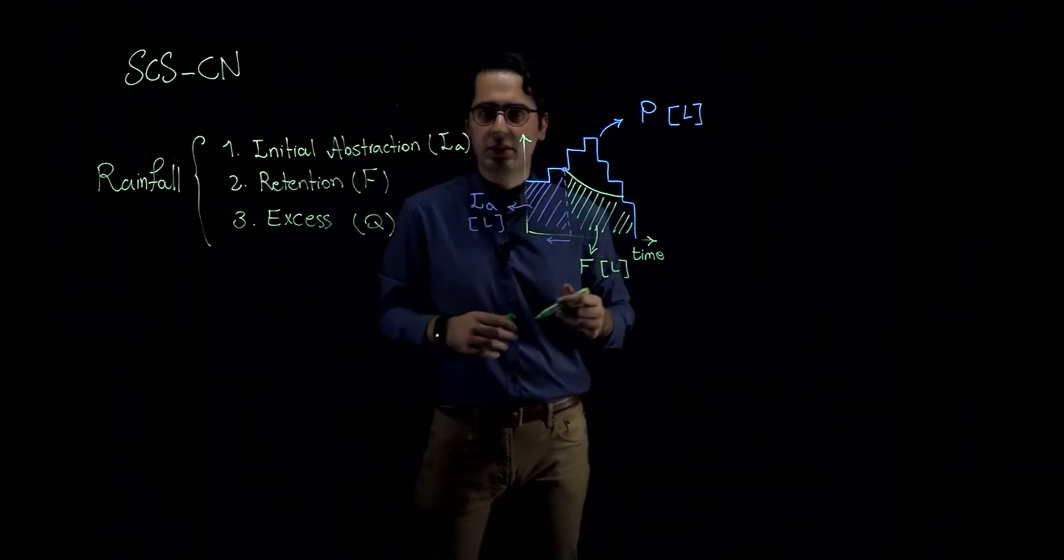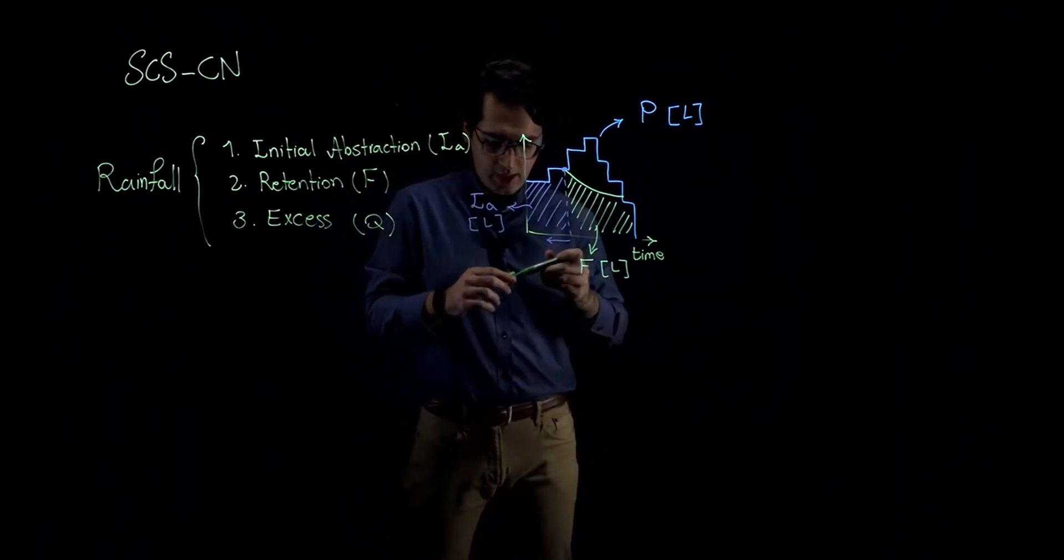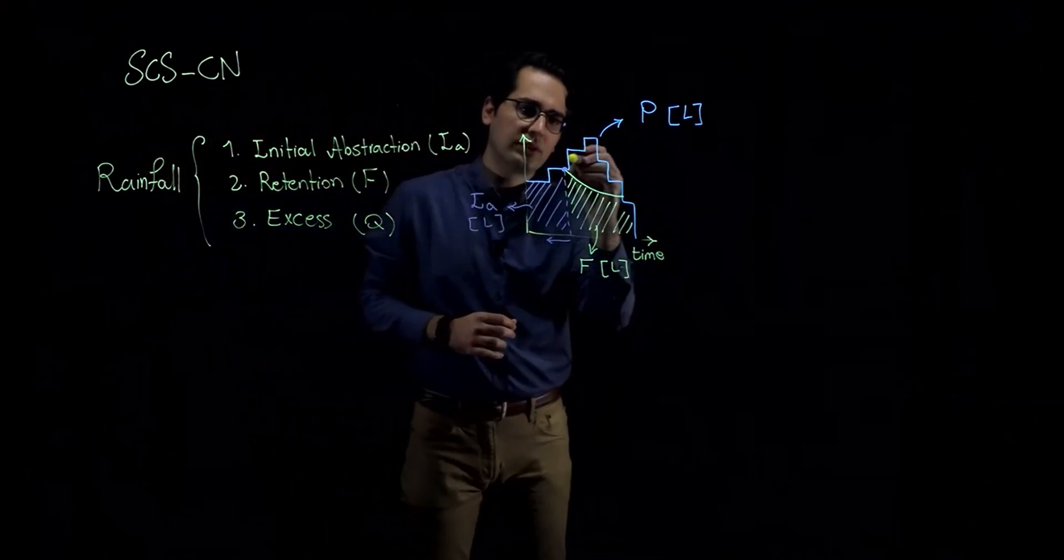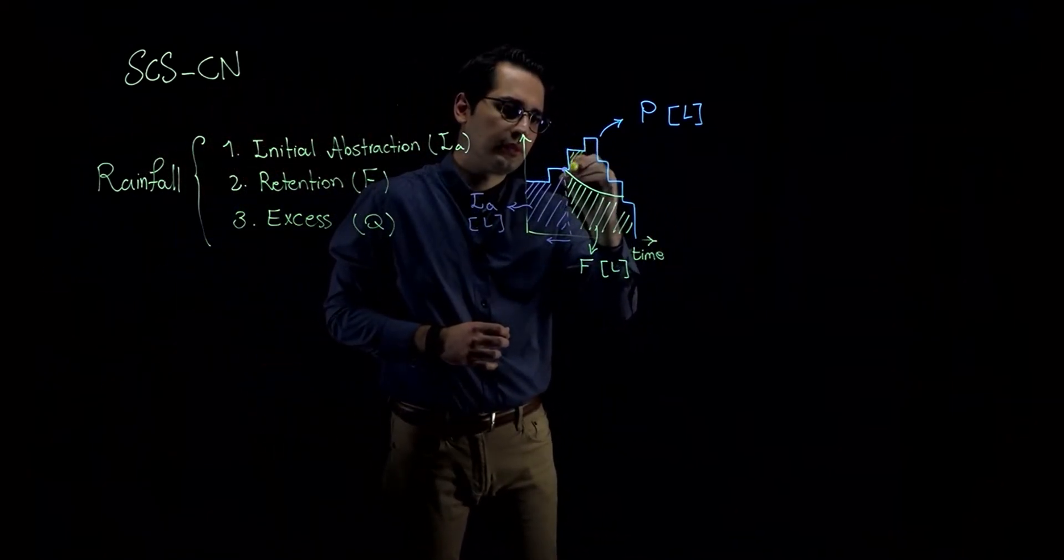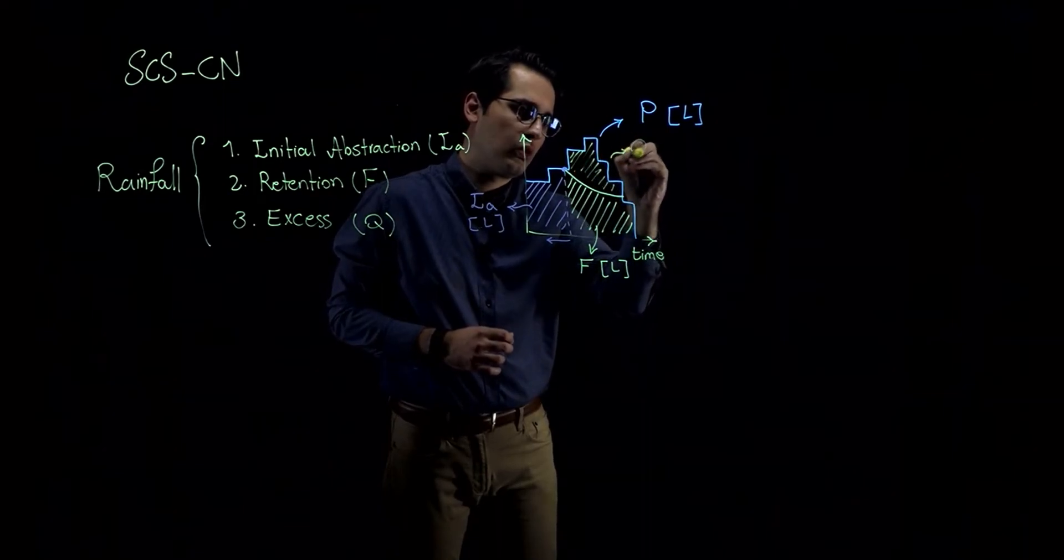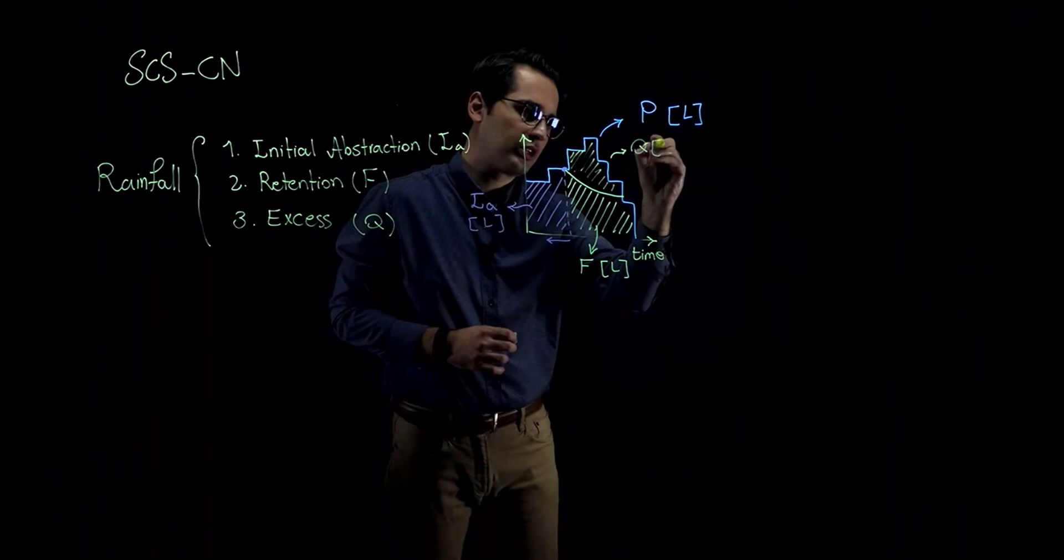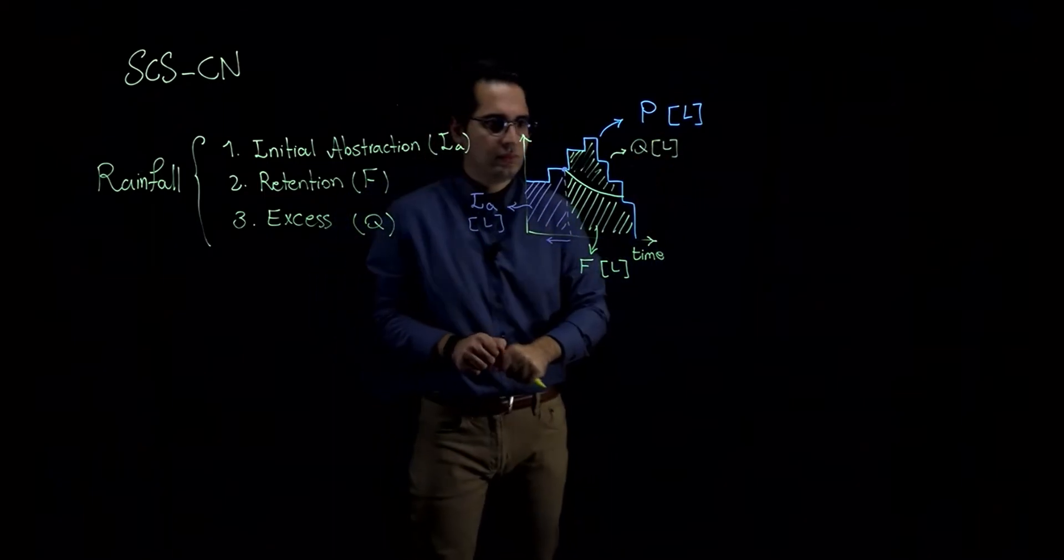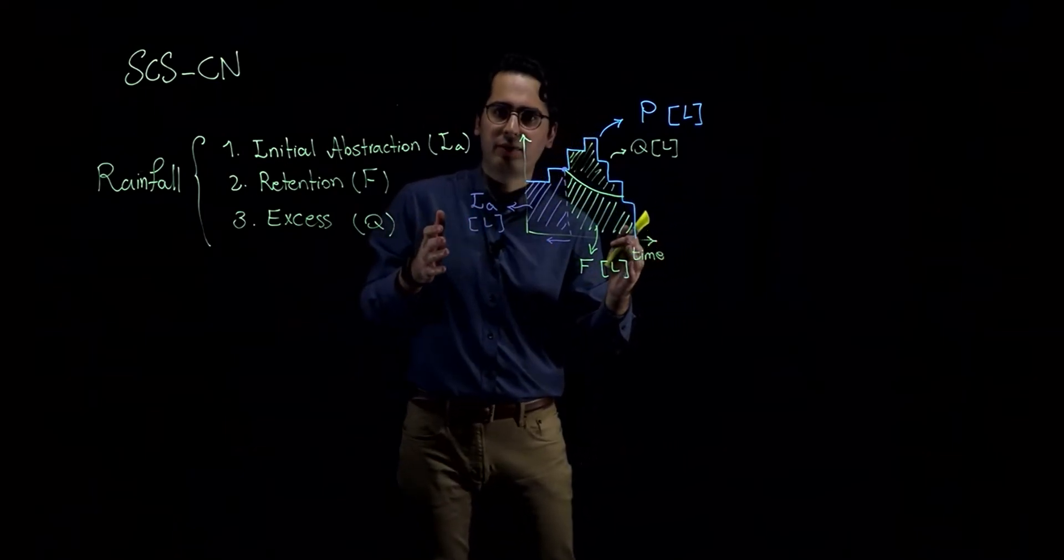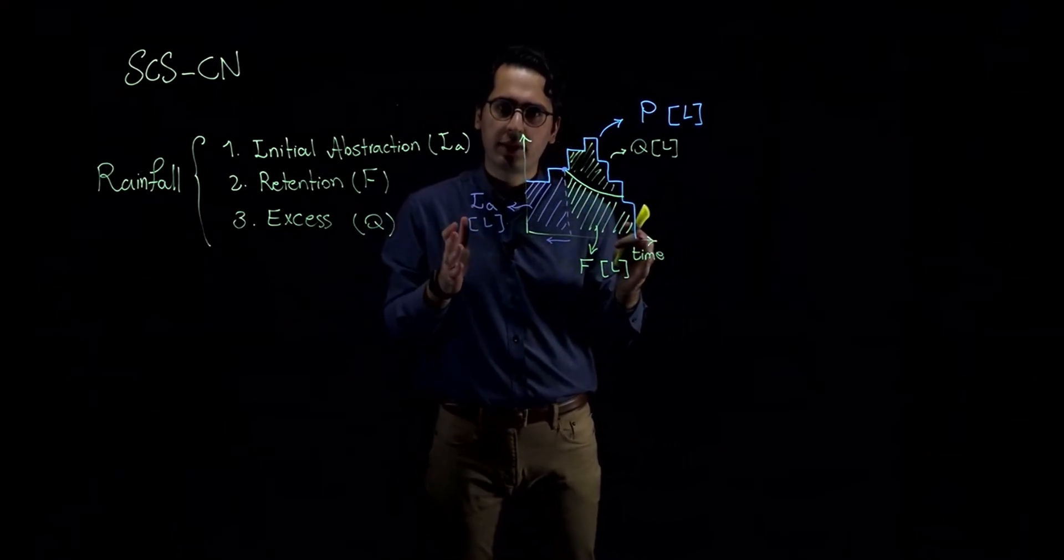And eventually right over here, we have the rainfall excess or Q, units of length. So this is the graphical representation of SCS curve number method.